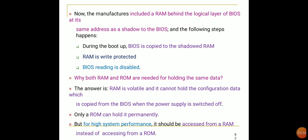During boot up, BIOS is copied to the shadowed RAM, RAM is write-protected, and BIOS reading is disabled. Why are both RAM and ROM needed for holding the same data? RAM is volatile and cannot hold configuration data when power is switched off. Only ROM can hold it permanently. However, for high system performance, it should be accessed from RAM instead of ROM.